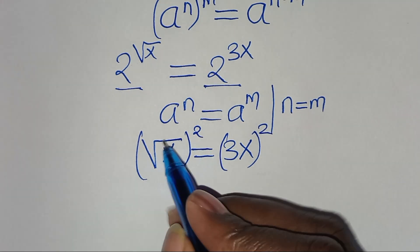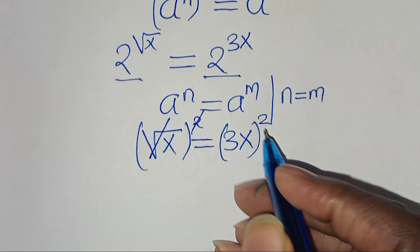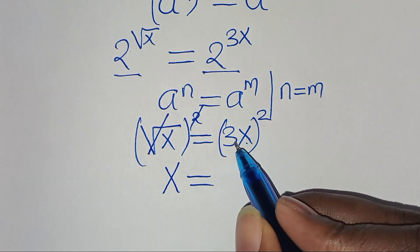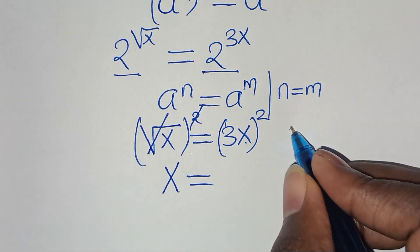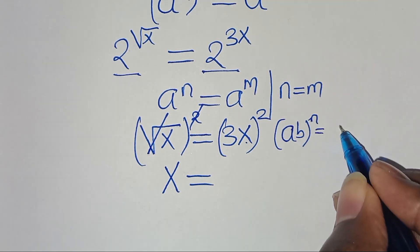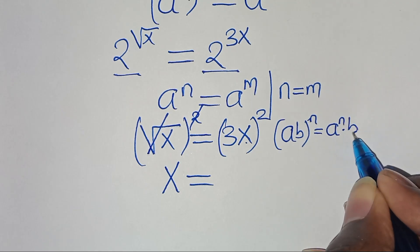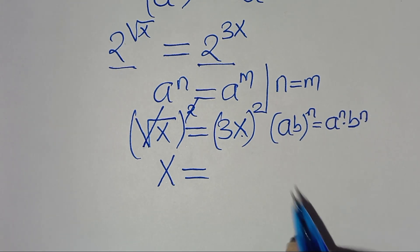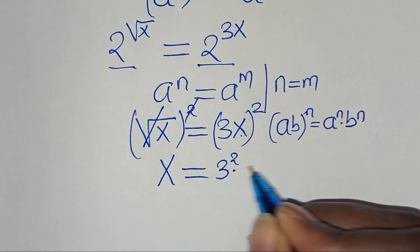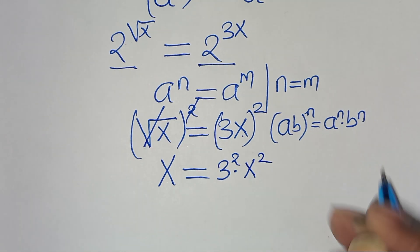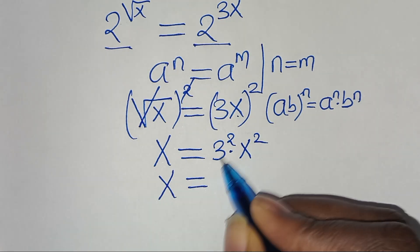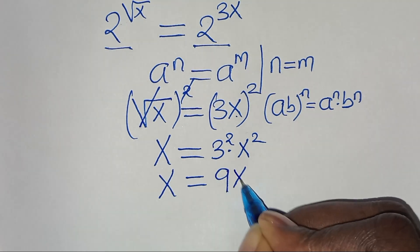The next step is to square both sides, so that we eliminate the square root sign and we have that x is equal to (3x) to the power of 2. This is in the form (a times b) to the power of n, which equals a to the power of n multiplied by b to the power of n. So we have 3 squared multiplied by x squared, giving us x equals 9x squared.